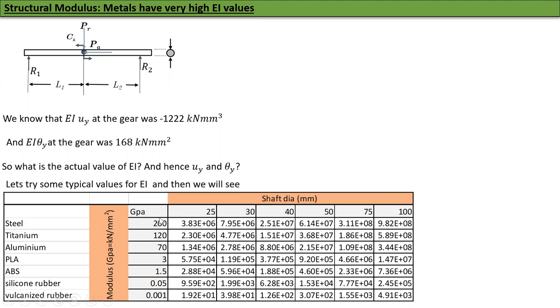There are three groups: steel, titanium, aluminum is one group. PLA and ABS - if you've done 3D printing, these are the two common things you get for 3D printed objects. Silicone rubber and vulcanized rubber just to show you what will happen if I make things out of rubber. Modulus E is in the 200 GPa for steel, 120 GPa for titanium, about 70 GPa for aluminum. PLA is 3 GPa, ABS is 1.5 GPa. Nearly 100 times smaller for PLA and ABS. Silicone rubber is like 10,000 times smaller. Vulcanized rubber is 100,000 times smaller modulus than steel.